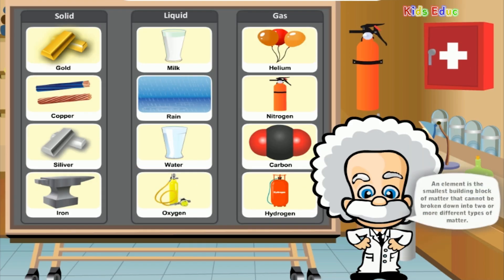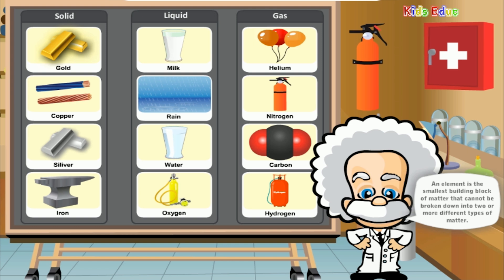So what are elements, atoms, molecules, and compounds? Here's a brief description. An element is the smallest building block of matter that cannot be broken down into two or more different types of matter.